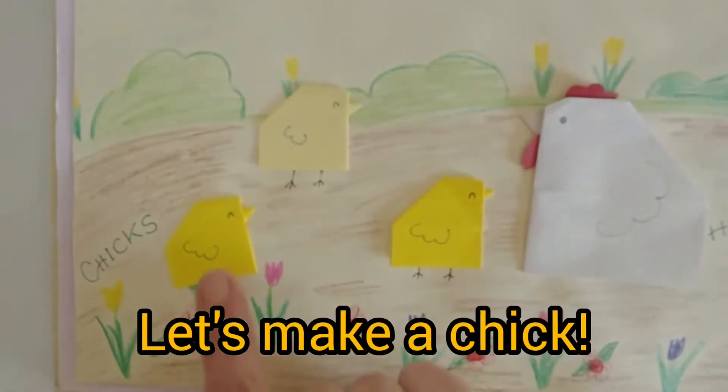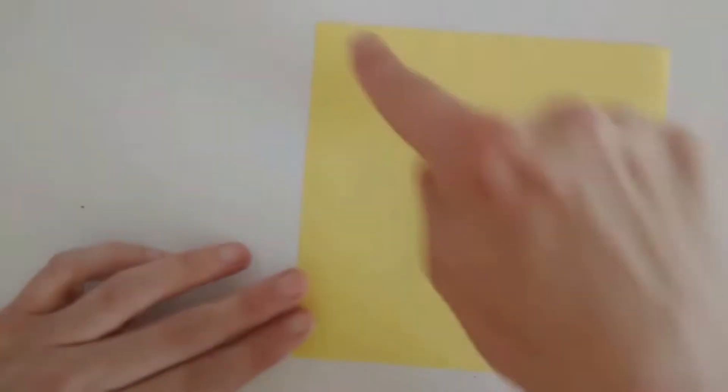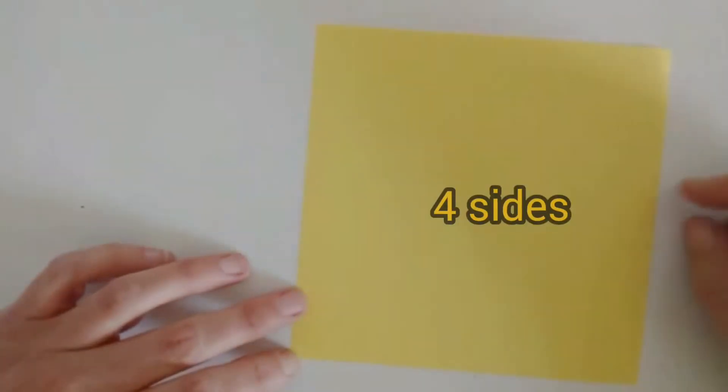Let's make a chick. Yellow paper. It's a square. One, two, three, four. Four sides.